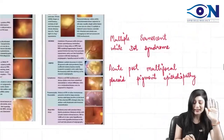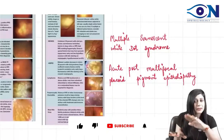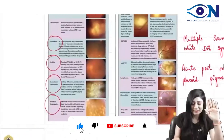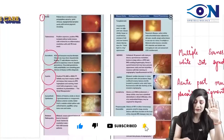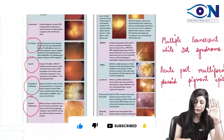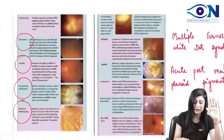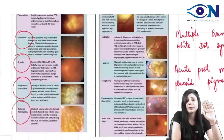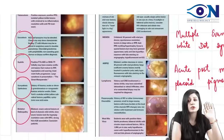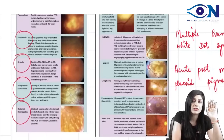Even if you do not remember the second list, please remember the first: tuberculosis, sarcoidosis, syphilis, sympathetic ophthalmia, birdshot retinopathy, along with toxoplasmosis — these are the most important causes of punched out lesions.